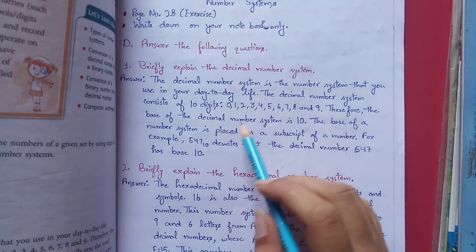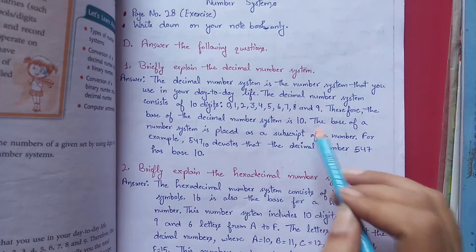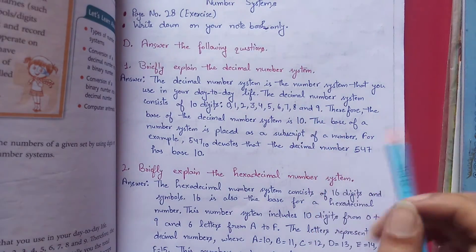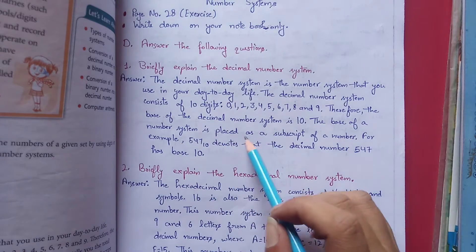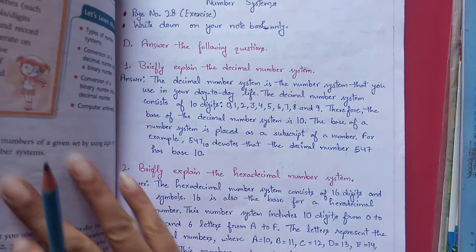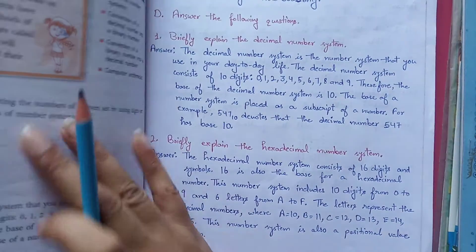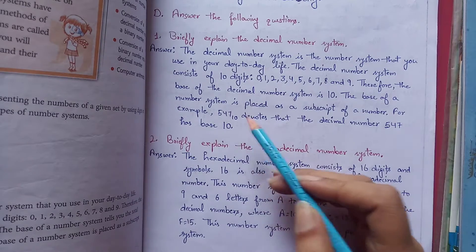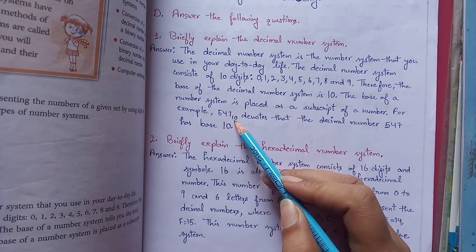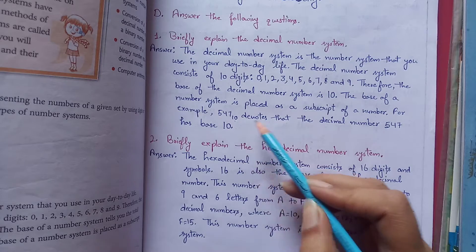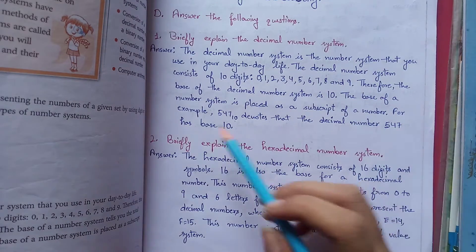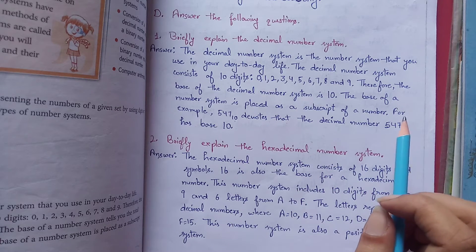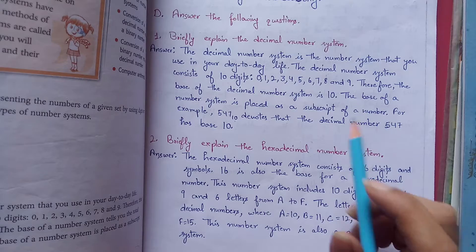Therefore the base of decimal number system is 10. Kisi bhi number system mein jitne digits hote hain, utna hi uska base hota hai. The base of a number system is placed as a subscript of a number. Base ko hum uski subscript ke taur pe place karte hain. Subscript mein maine bataya tha aapko ki number ke right side niche daal di jaati hai, jaise yaha pe hai. 547 ka base kitna diya humne? 10. This denotes that the decimal number 547 has base 10, that this is a decimal number. This is your decimal number system jo hum commonly use karte hain.